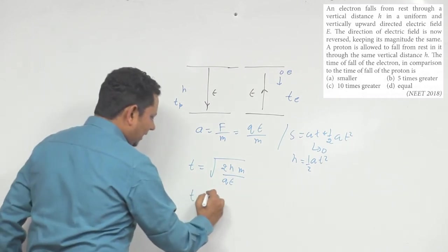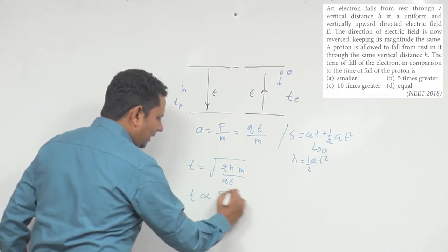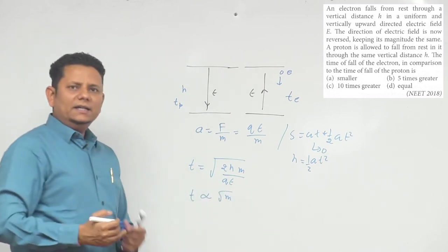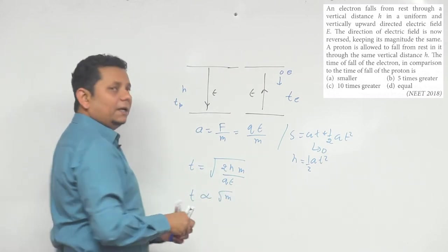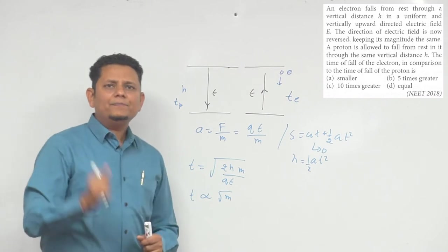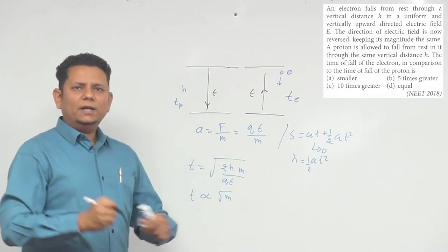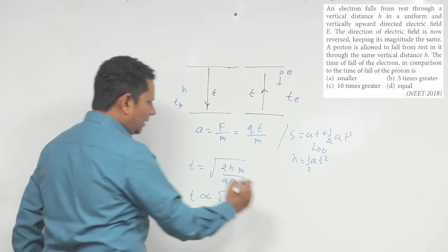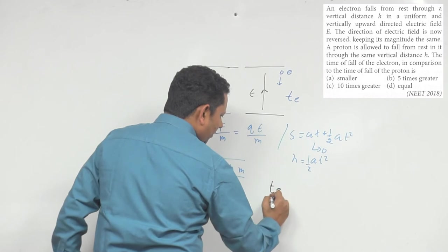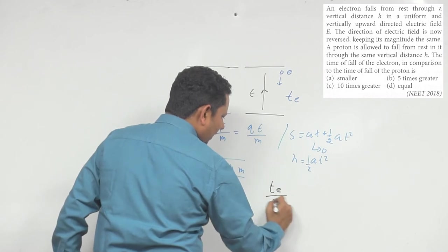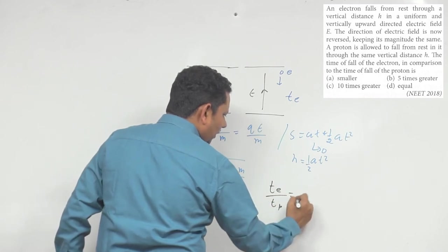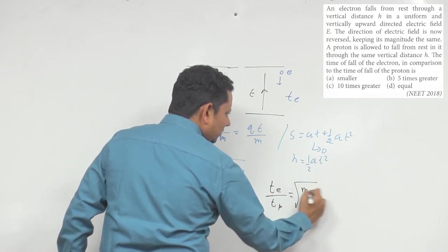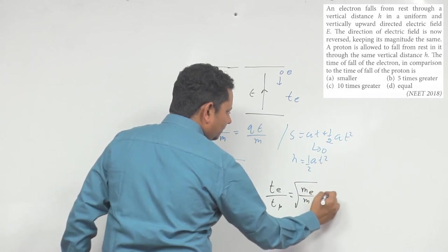तो हम यह कह सकते हैं कि time directly proportional है mass के square root के। इसका मतलब time of electron divided by time of proton = √(mass of electron / mass of proton)।